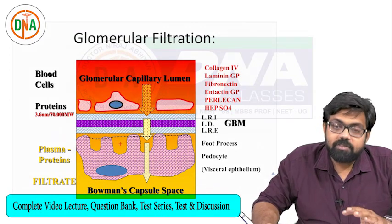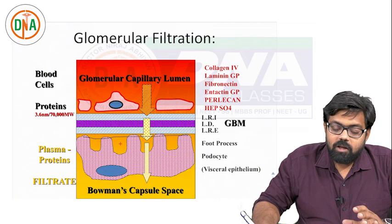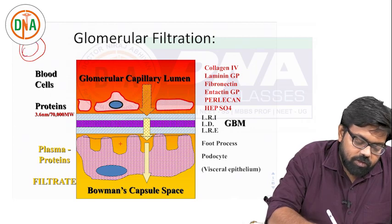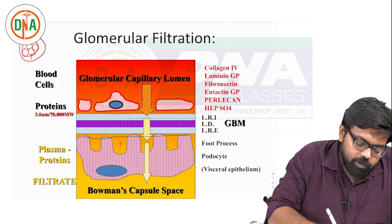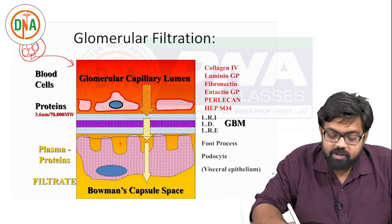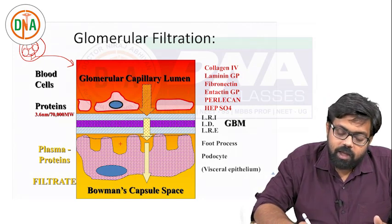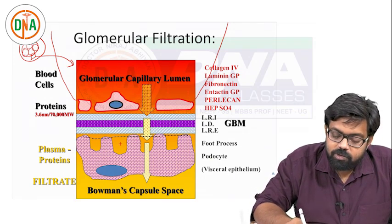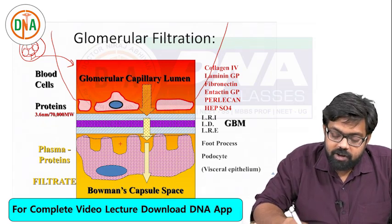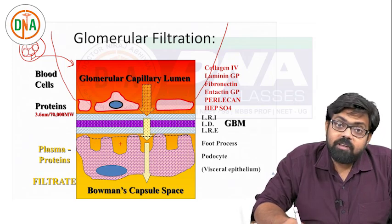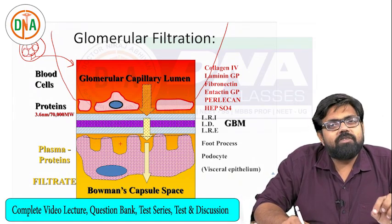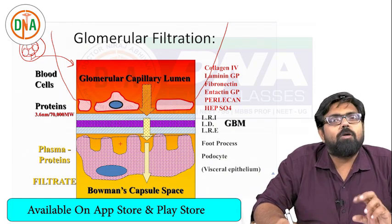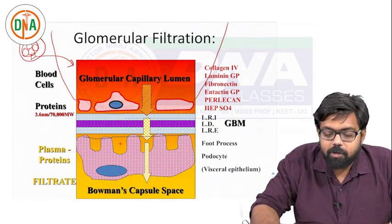This image beautifully depicts all the normal structures of the electron microscopic view of the glomerulus. Imagine a small part magnified - superiorly is the glomerular capillary lumen. What you are looking at are the fenestrations, which are 70 to 100 nanometers. The outer aspect shows the basement membrane, which has a central lamina densa, inner lamina rara interna, and outer lamina rara externa. The glomerular basement membrane is made up of type 4 collagen.